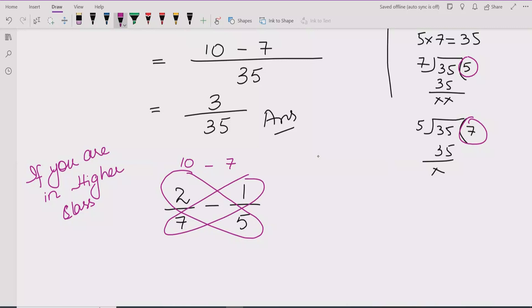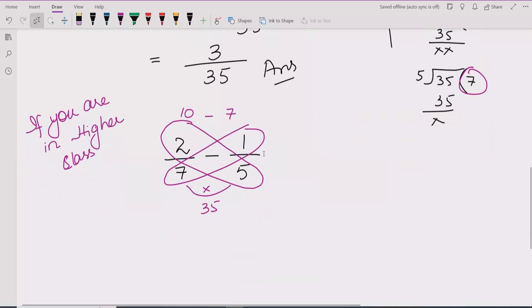7 times 1 is 7 and then after that we will multiply this one, 7 times 5 is 35. So we will write like this, 10 minus 7 upon 35 which is equal to 3 upon 35. So this is the answer of this question.